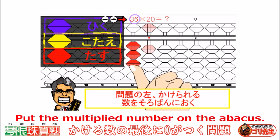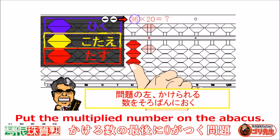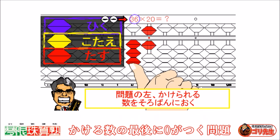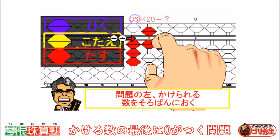Put the multiplied number on the Abacus: thirty-six.